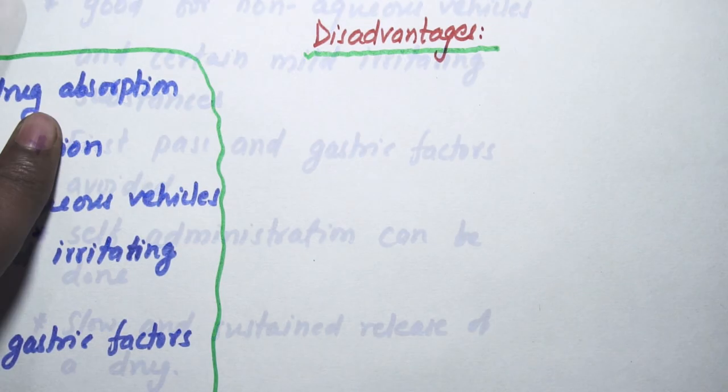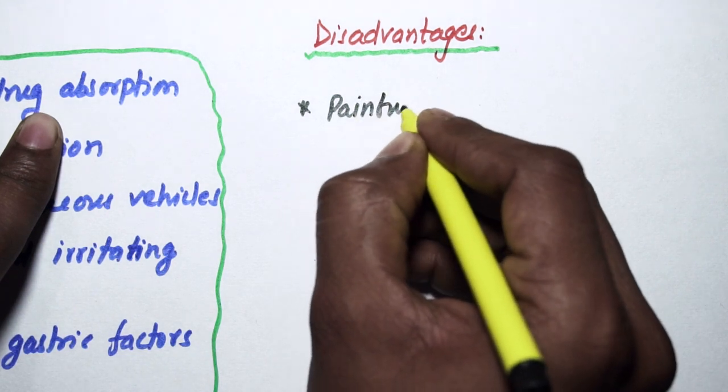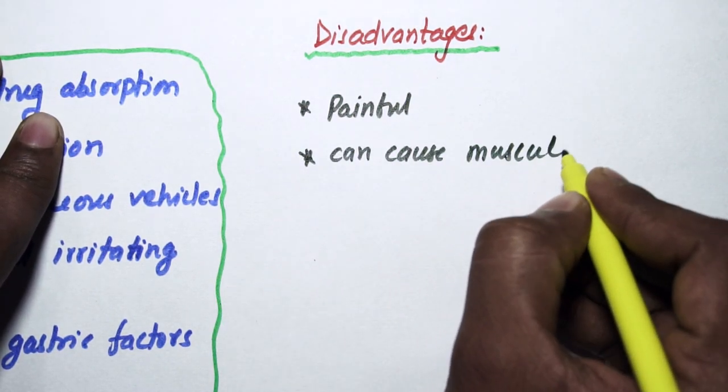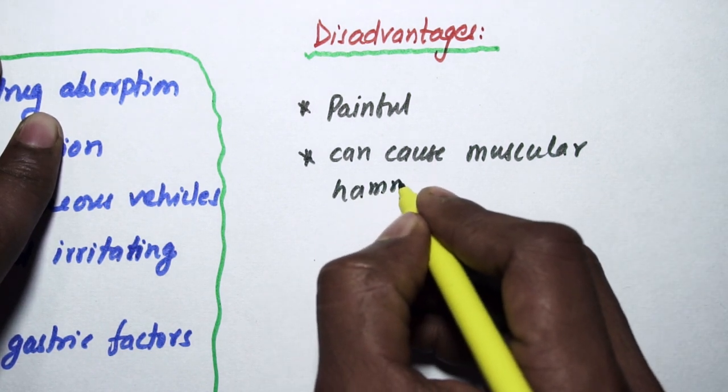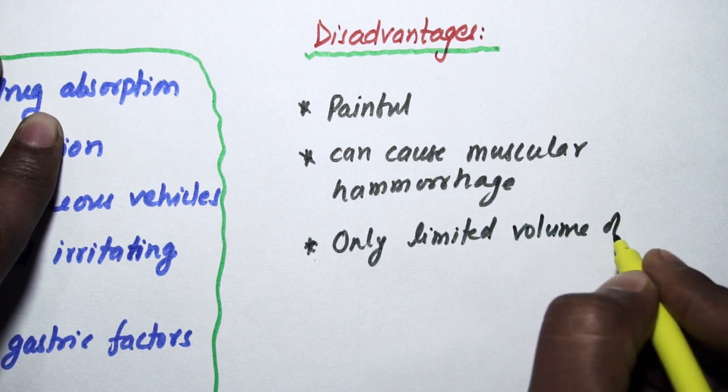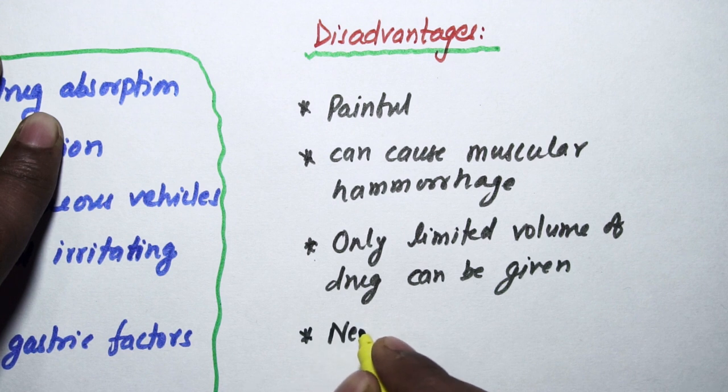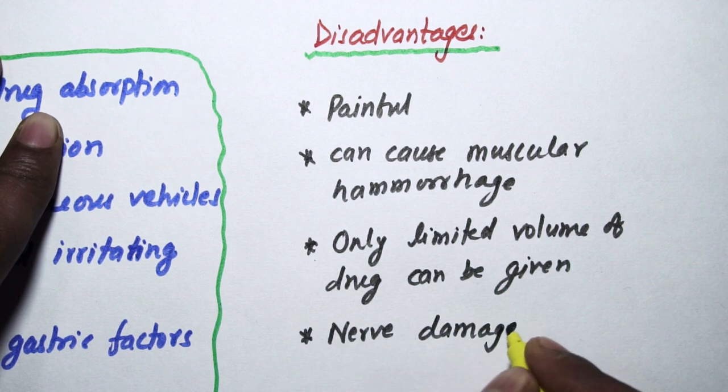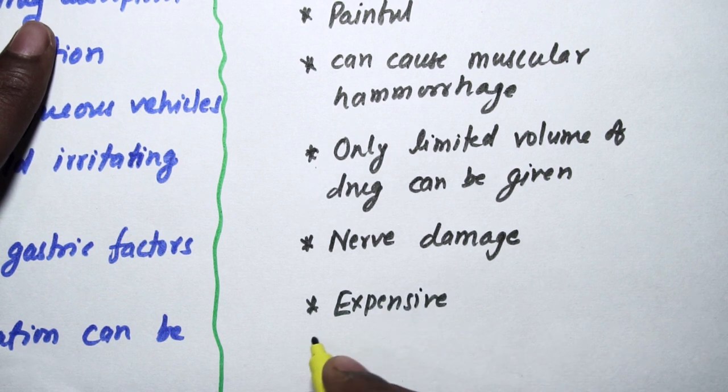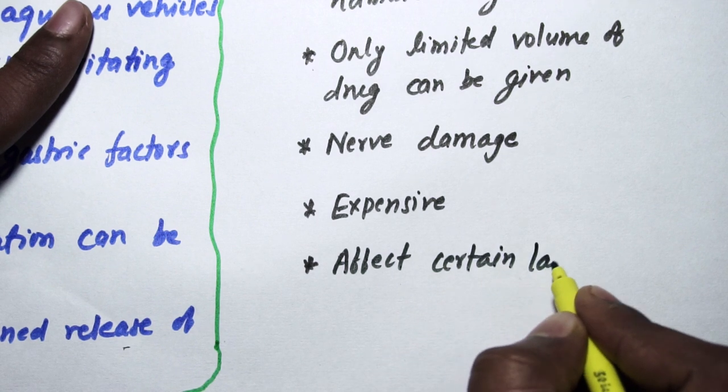Coming to disadvantages: it is painful, can cause muscular hemorrhage, only limited volume of drug can be given, nerve damage is also possible, relatively expensive.